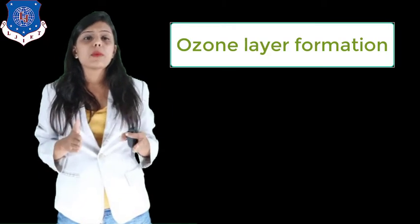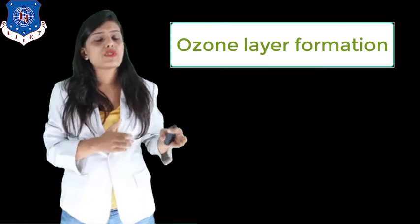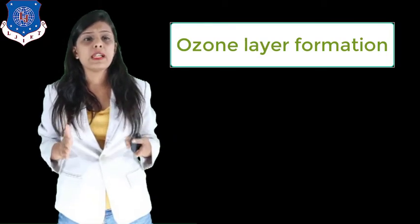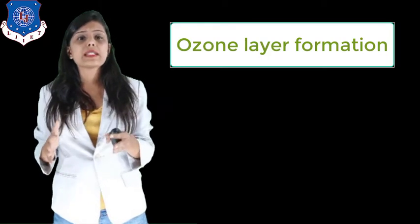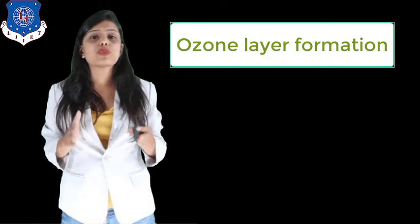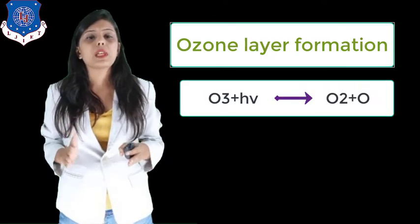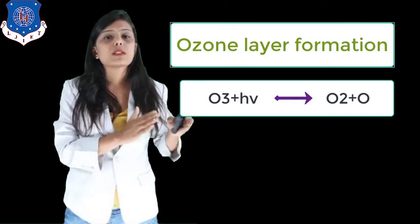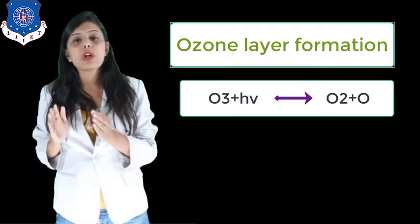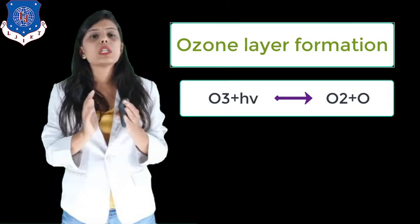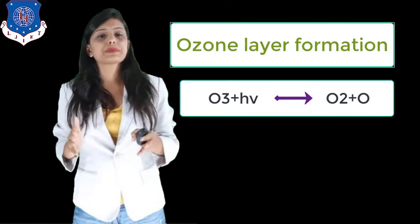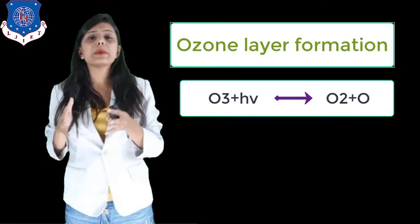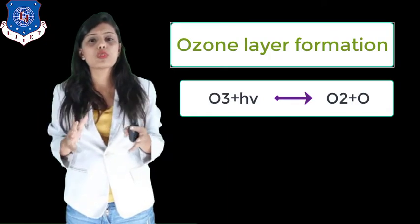Ozone thus formed distributes itself in the stratosphere and absorbs harmful ultraviolet radiation. It is continuously converted back to molecular oxygen: O3 plus UV gives O2 plus O. The net result of these reactions is an equilibrium concentration of ozone.